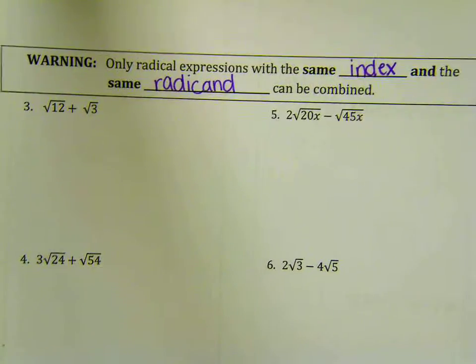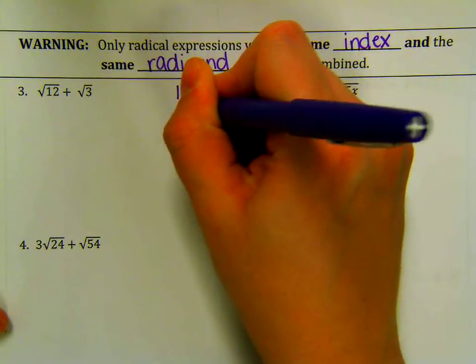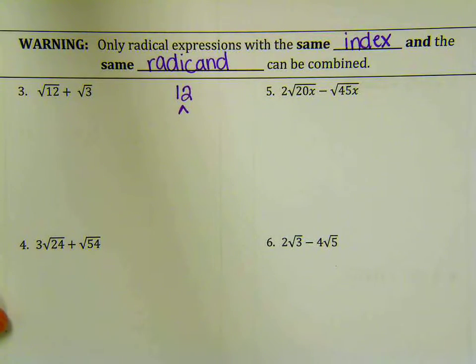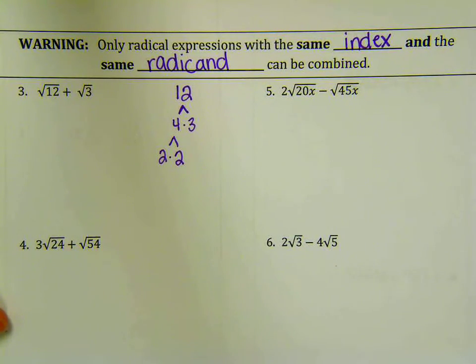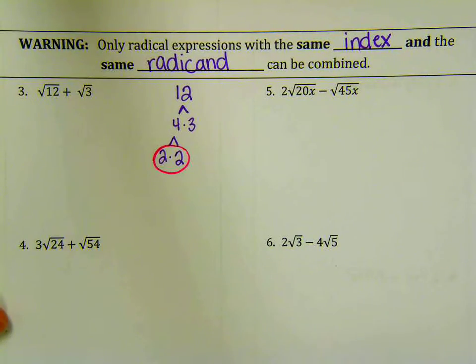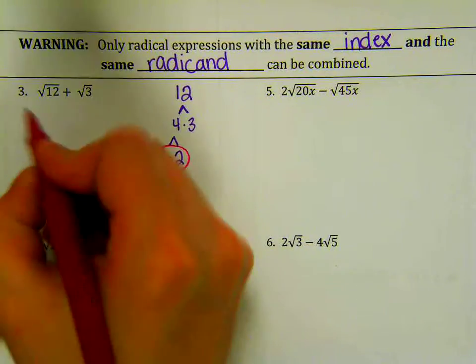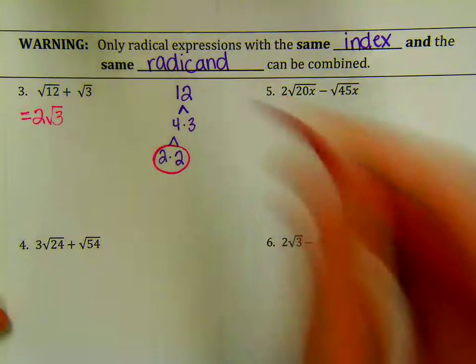So in number 3, we do not have the same radicand. I need to simplify the square root of 12 to see if I can get it to look like the square root of 3. Over here, I'm going to write my factor tree. So this is why we did what we did in 8.3. How can I split up 12? 4 and 3. And then I can split up 4 as 2 and 2.